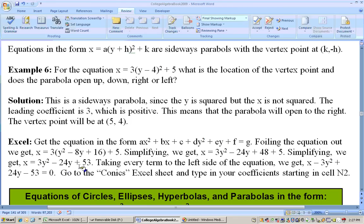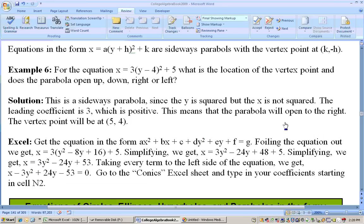Now, we've got to take every term to the left-hand side. You could leave the constant over there if you wanted to. But we'll take everything over to the left-hand side. And we would get this right here. Let me hit enter here so you can see this good. We would get x, take this over, minus 3y squared, take the -24y over. So it's +24y, take the +53 over, and you get -53.